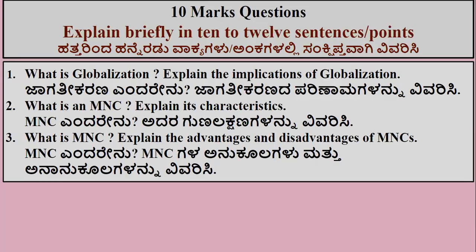Let's go to ten marks questions. What is globalization? Explain the implications of globalization — when writing about implications, you have to write both advantages and disadvantages, both positive and negative points about globalization. What is an MNC? Explain its characteristics — give the meaning, expand it, write the definition, give some examples of MNCs in India or in other countries. Also: What is an MNC? Explain the advantages and disadvantages of MNCs.